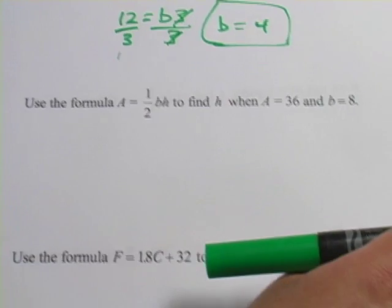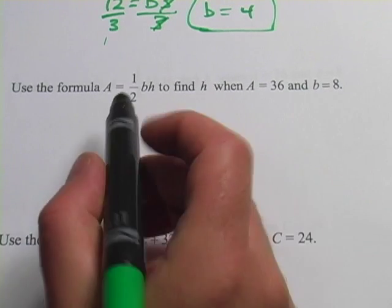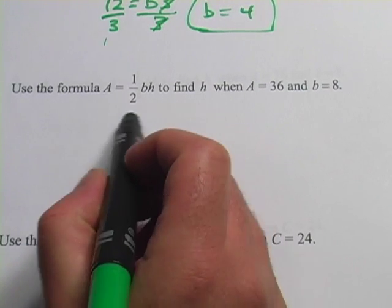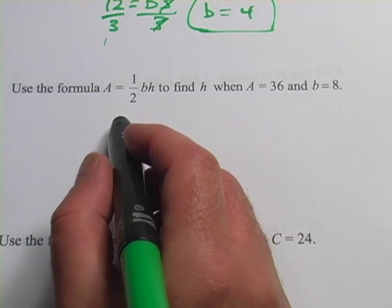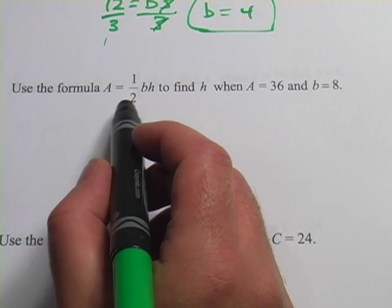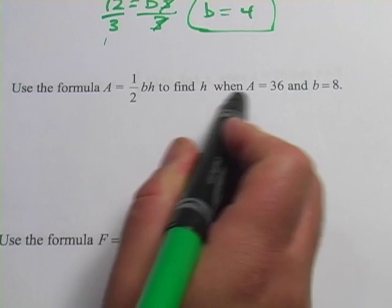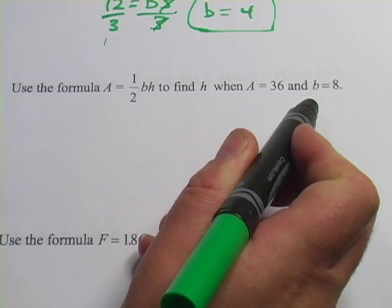Not too hard. Let's look at another one. Now this formula should look familiar to you. Area equals one-half base times height. That is the formula for a triangle, the area of a triangle. And it says use that formula to find h when A equals 36 and b equals 8.